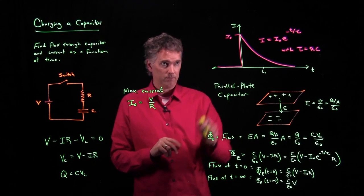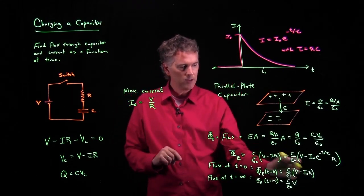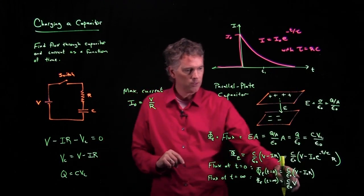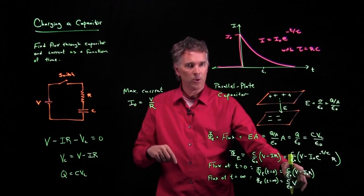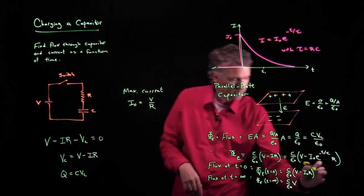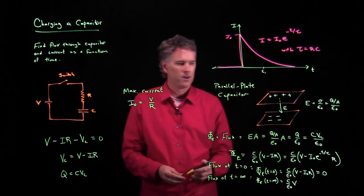This is the maximum current, I naught. And now if we go back to our flux calculation and you look at this result right here, wait a minute, V is equal to I naught R. So what's the flux through the capacitor at T equals zero? It's zero. All right.